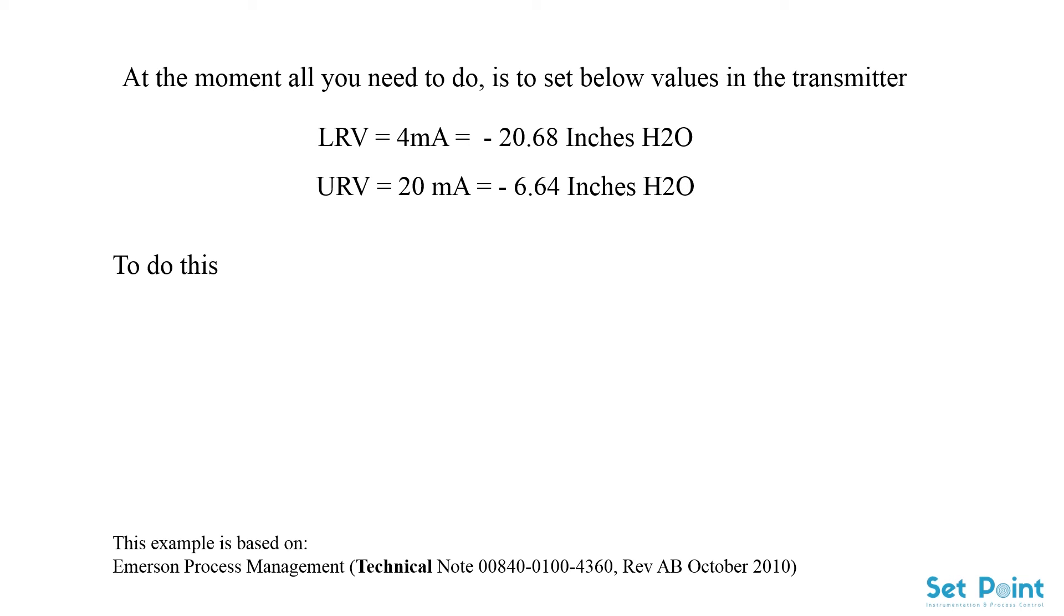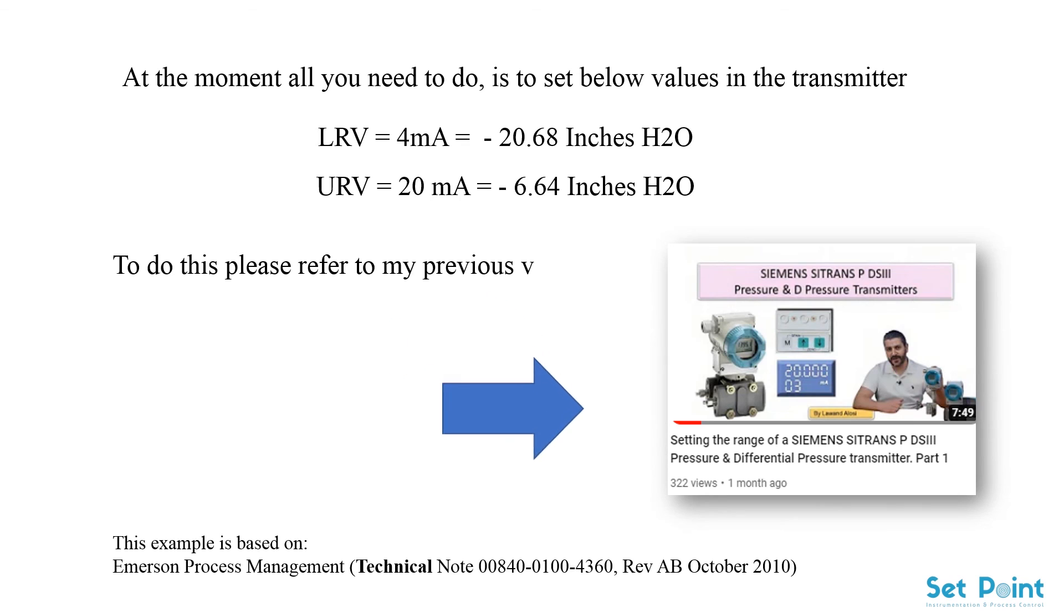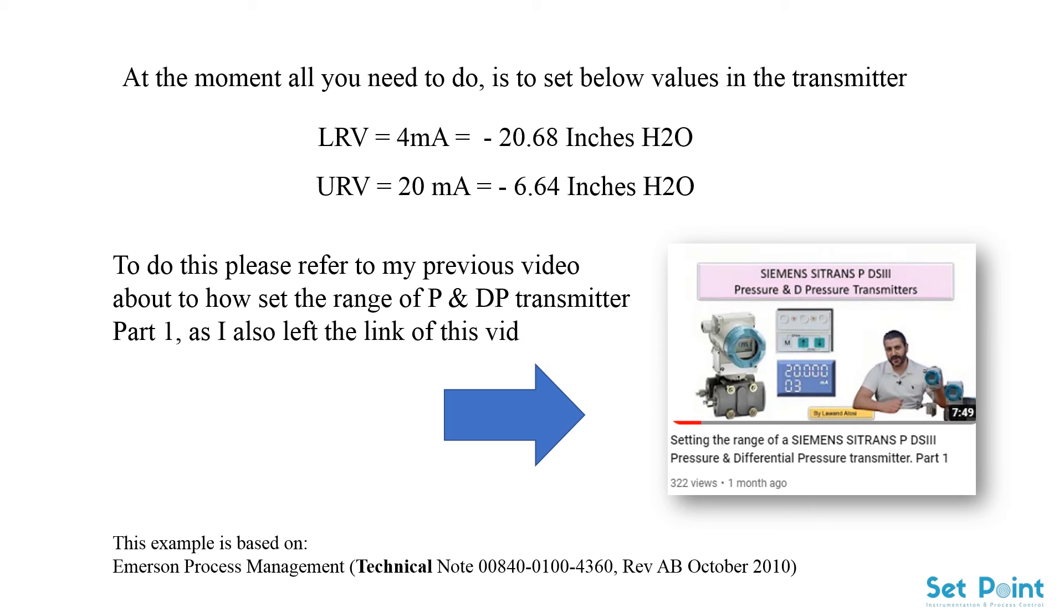At the moment all you need to do is to set below values into the transmitter. To set these values into the DP transmitter, please refer to my previous video about how to set the range of P and DP transmitter part 1. I also left the link of this video in the descriptions box below.